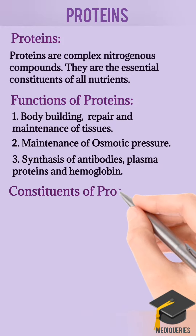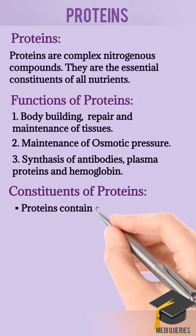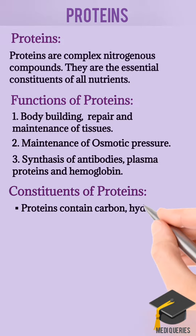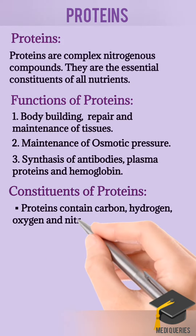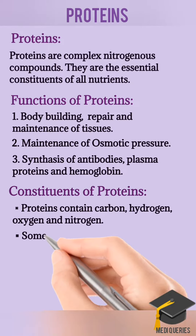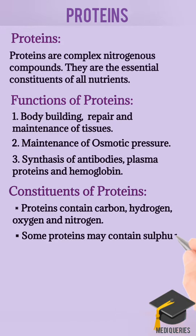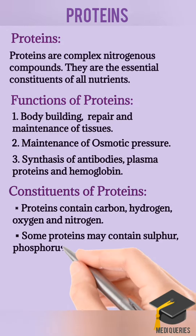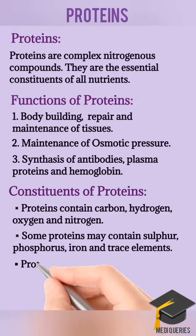Constituents of Proteins: Proteins mainly contain carbon, hydrogen, oxygen and nitrogen. Some proteins may also contain sulfur, phosphorus, iron and trace elements.